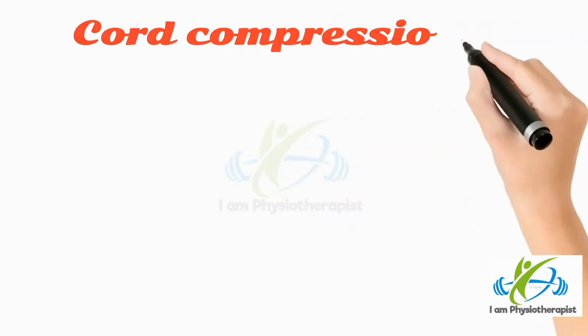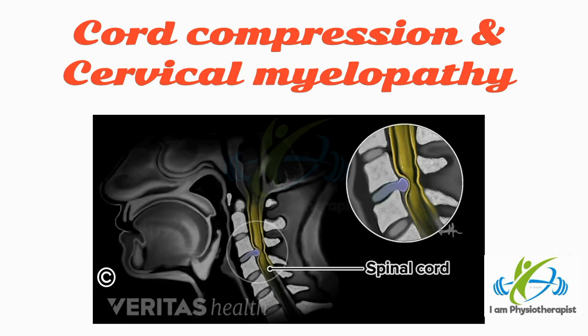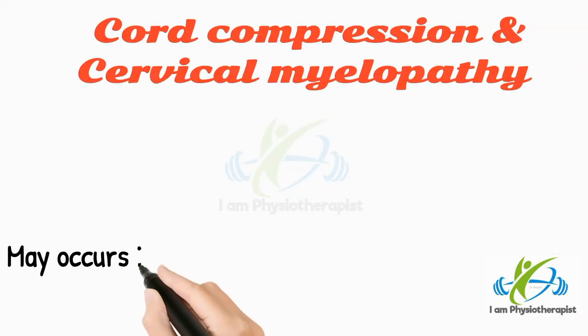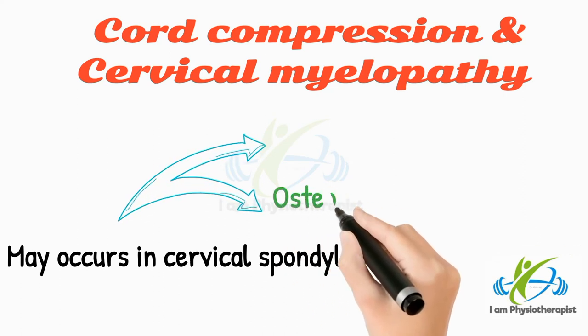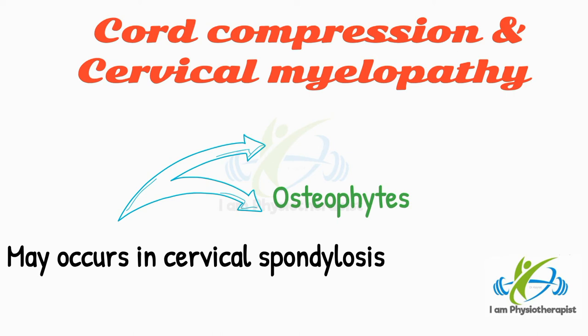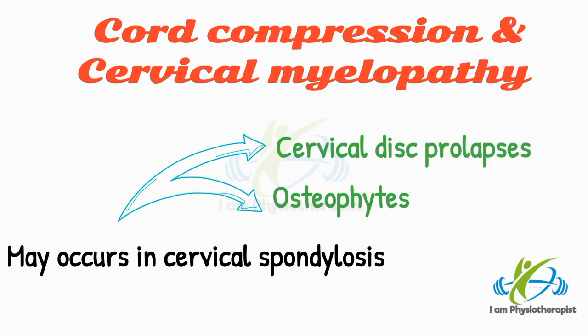Cord compression and cervical myelopathy. Cord compression occurs due to developmental narrowing of the spinal canal, or after old ununited fractures of the dens, or spinal subluxations. It may occur in cervical spondylosis due to osteophytes protruding posteriorly from the vertebral bodies, from the uncovertebral joints, or due to cervical disc prolapse.